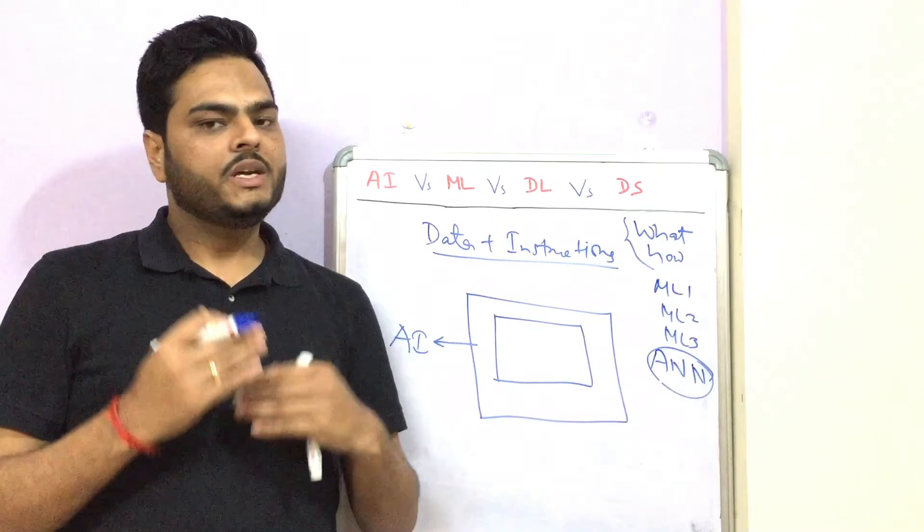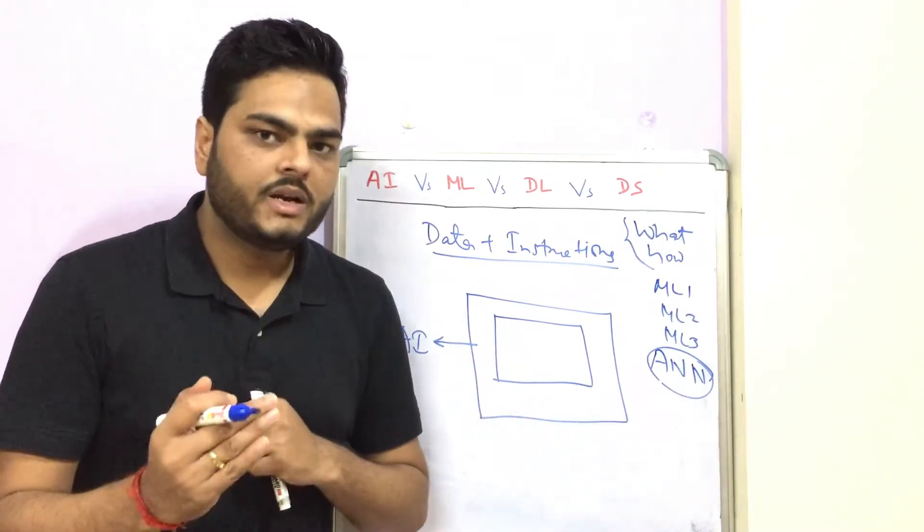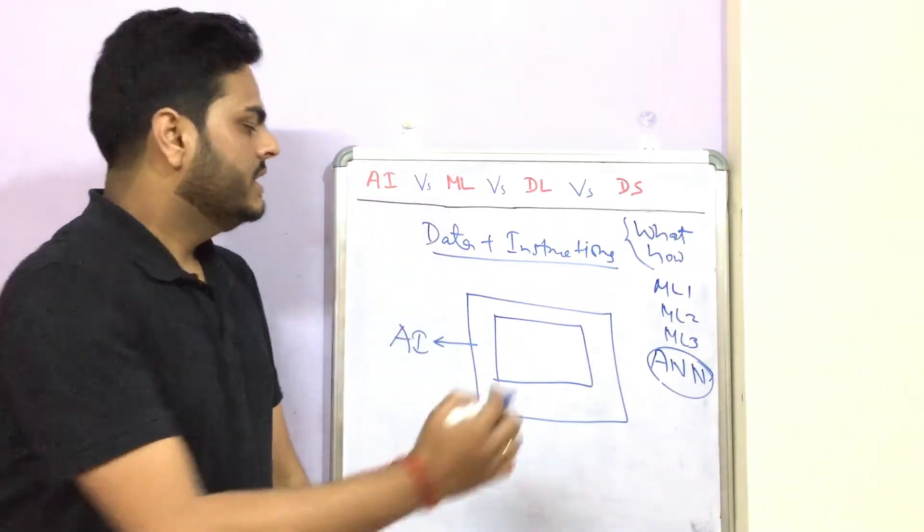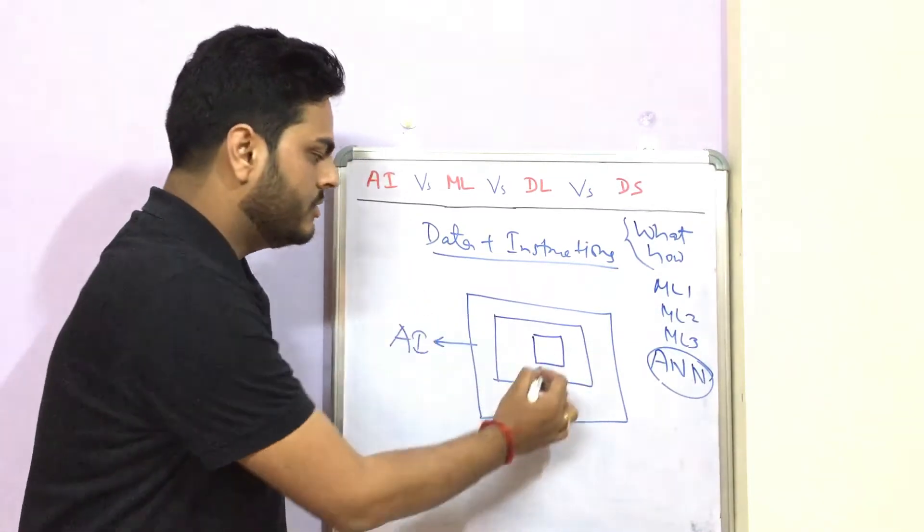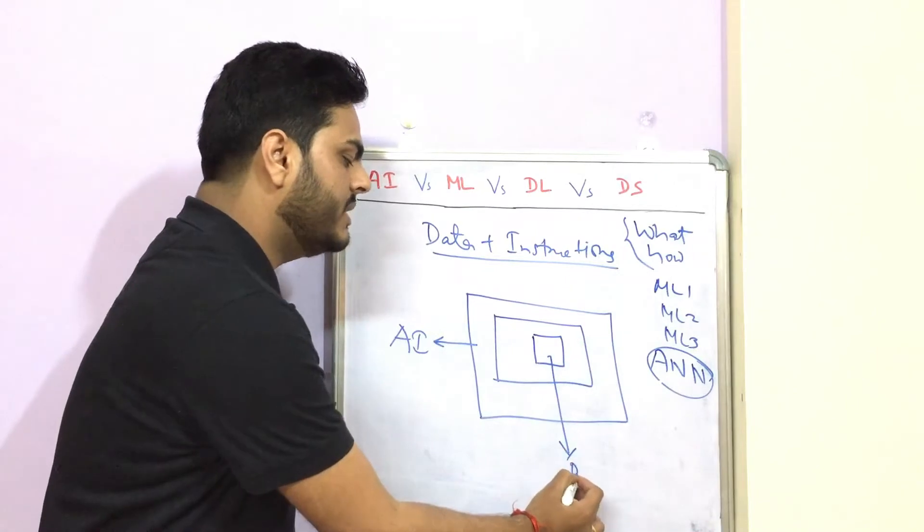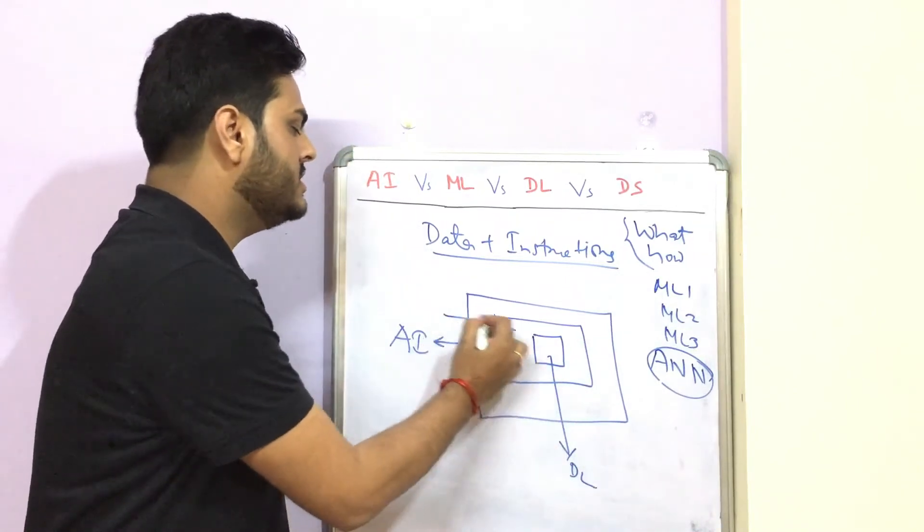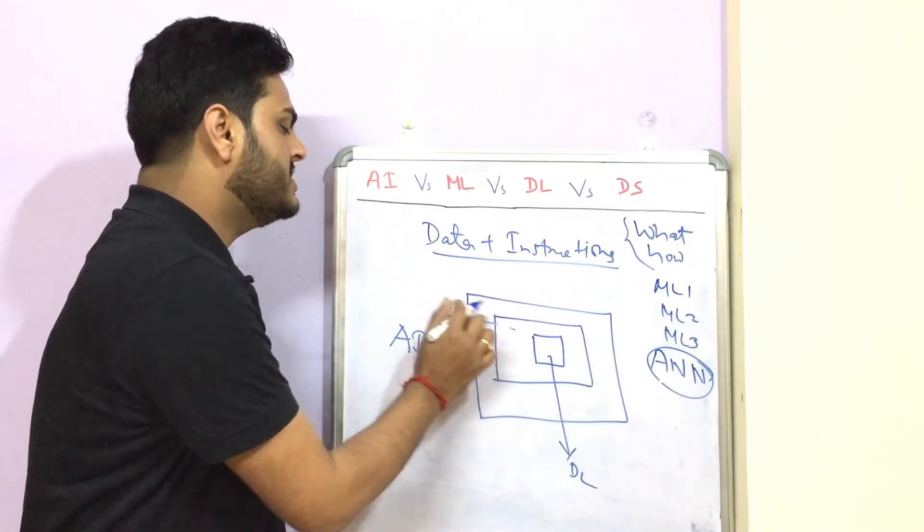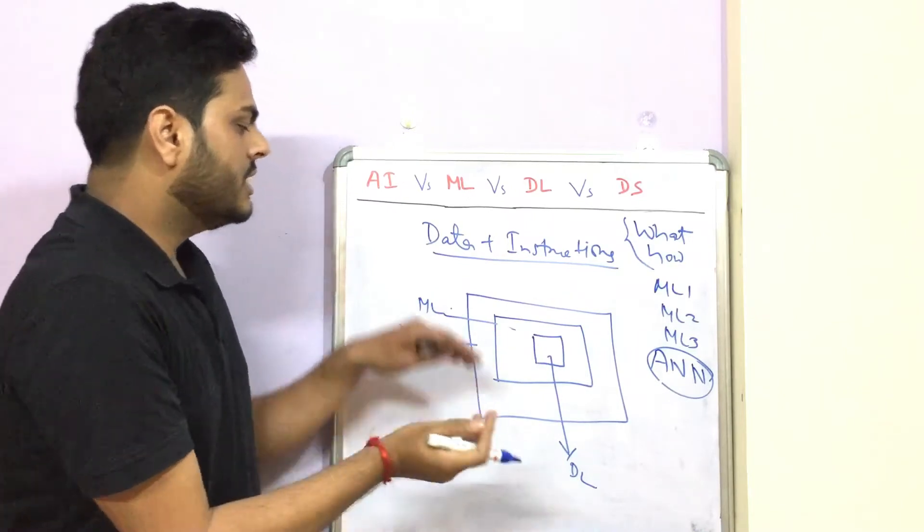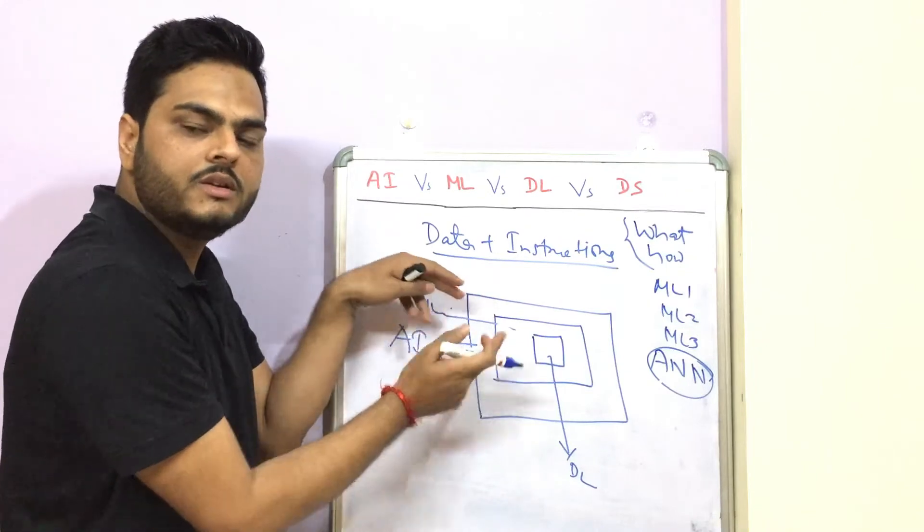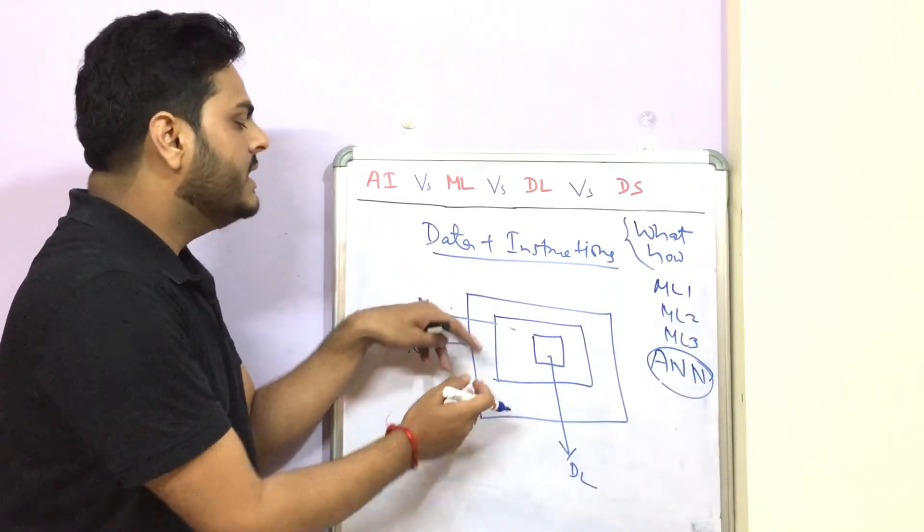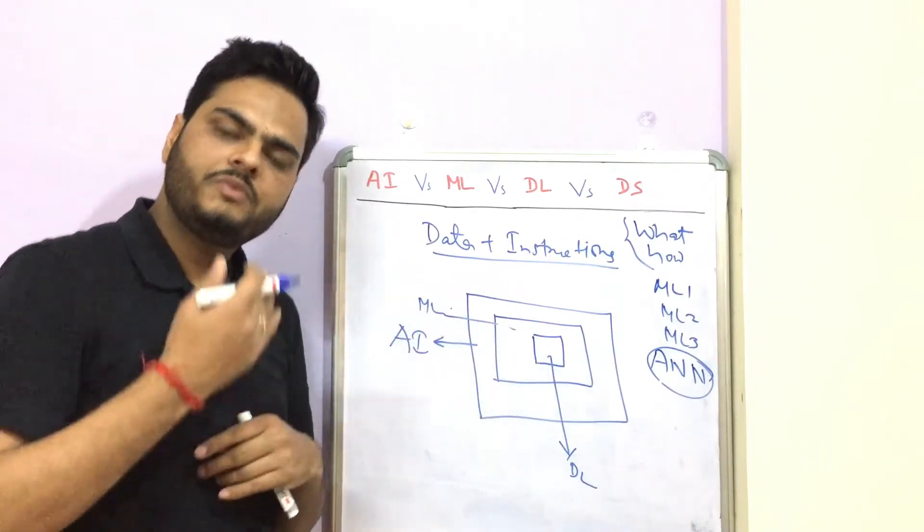This is nothing but one of the ways of learning the pattern from the data. And when we create multiple layers of this neural network, that particular learning process is known as deep learning. Deep learning is a special case of machine learning. This box here is machine learning. The outer is AI, inside AI we have machine learning, and inside machine learning we have a specific technique known as deep learning.